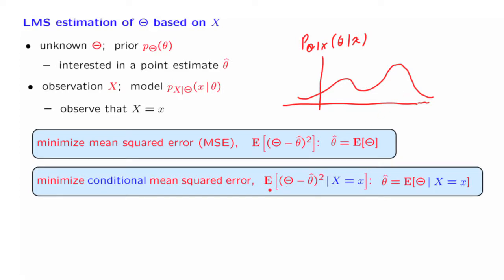We want to minimize the conditional mean squared error, because this is the mean squared error that applies to the conditional universe in which we have obtained a particular observation. This is a problem identical to the problem of minimizing that quantity, except that now it is posed in a conditional universe. So we just follow the same steps and obtain the same solution: the conditional expectation given the information that we have available.